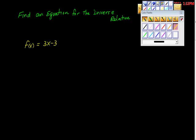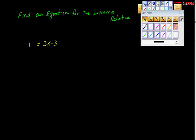Alright, so lots of ways to do this, not the least of which is to switch this. Take it out of f of x form and put it into y form, right? So I put it into this form. A lot of people will switch x and y here, but I don't. I solve for x. So the first thing I'm going to do is add 3 to both sides. So we get y plus 3 is equal to 3x, isn't it?